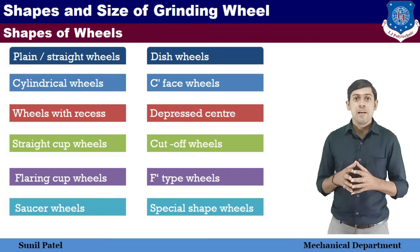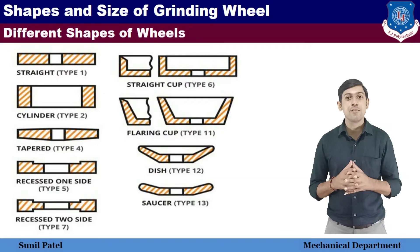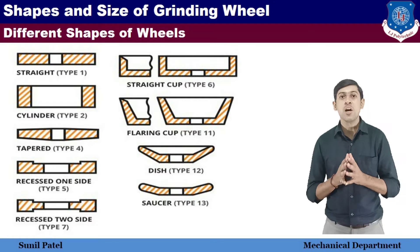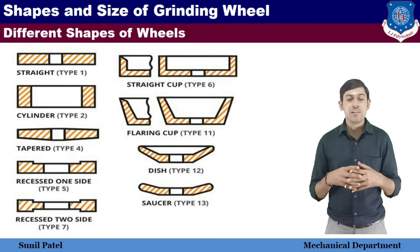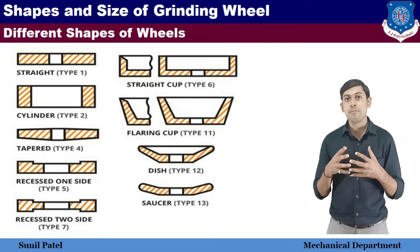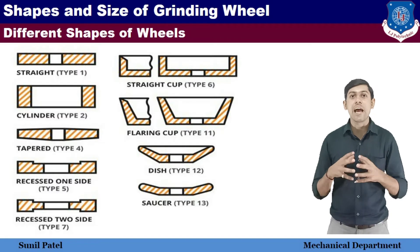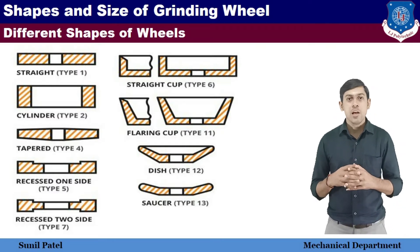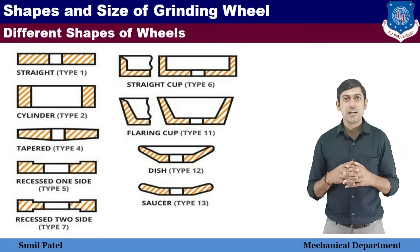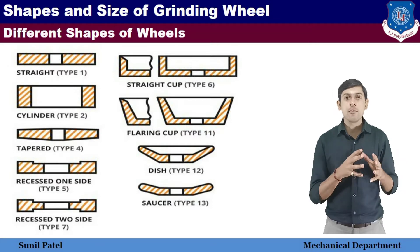Now we will see the specific wheel types. The straight wheel is Type 1, the tapered wheel is Type 4, the one-side recessed wheel is Type 5, and the straight cup wheel is Type 6. These types follow the Indian Standard. If you are in India and ask a supplier for a Type 1 wheel, you will receive the straight or plain straight wheel.